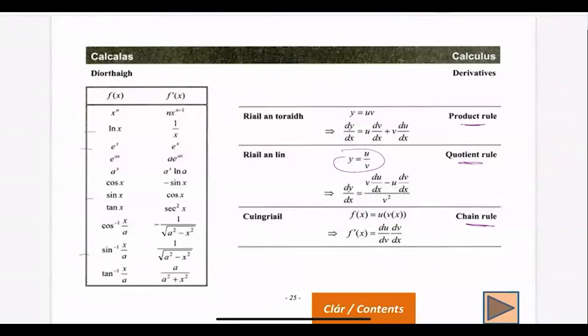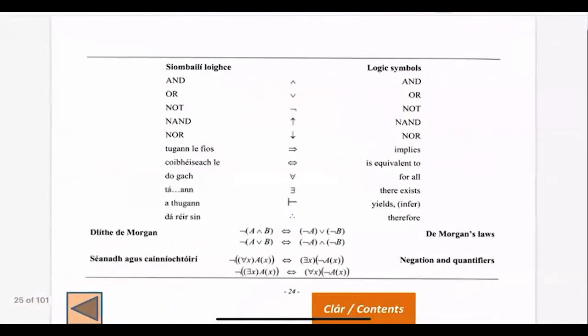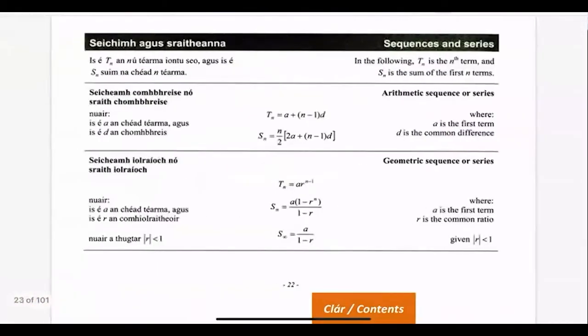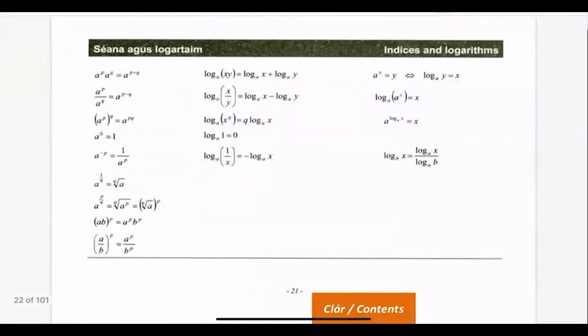We also use indices a lot, especially the reciprocal rule. For example, 1/x² can be written as x^(-2), which allows us to use the x^n rule instead of the quotient rule.